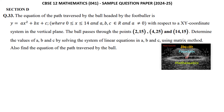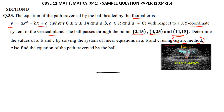Given that the equation of the path traversed by the ball headed by the footballer is y = ax² + bx + c, which is a parabola where x lies between 0 and 14, and a, b, c are real numbers with a ≠ 0. The ball passes through the points (2, 15), (4, 25), and (14, 15). We need to determine the values of a, b, and c by solving the system of linear equations using the matrix method.